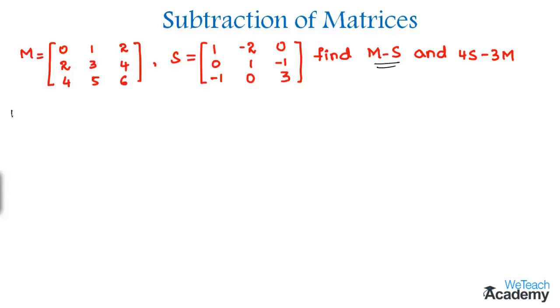So we represent this in the form of M minus S which is equal to, and then by subtracting 0 minus 1 we get minus 1, and then 1 minus of minus 2 which becomes plus 2. So we get 1 plus 2 that is 3, and then 2 minus 0 is 2.